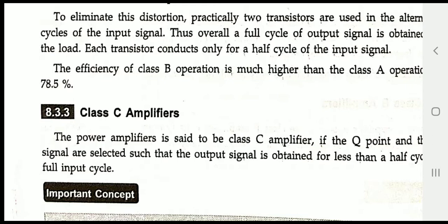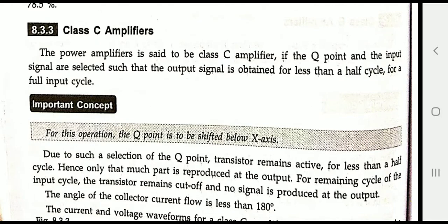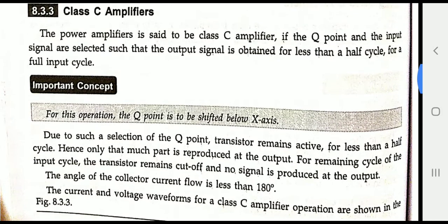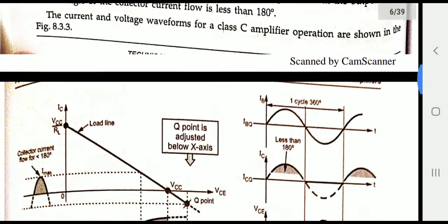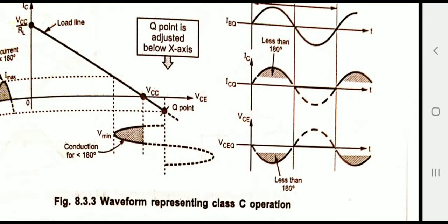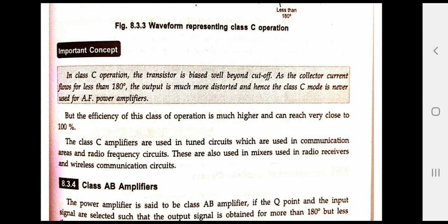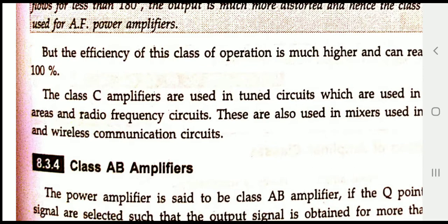Our intention is to reach efficiency to 100%, so we move to the third classification: Class C amplifier. In Class C, the Q point and the input signal are selected so that the output signal is obtained for less than one half cycle of the input cycle. The Q point is placed below the X axis. This improves efficiency to close to 100%. However, the disadvantage is that distortions in the output are high.